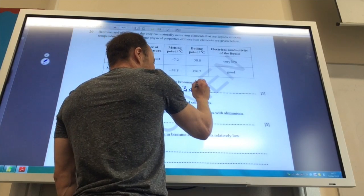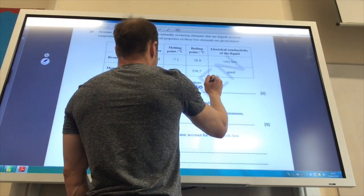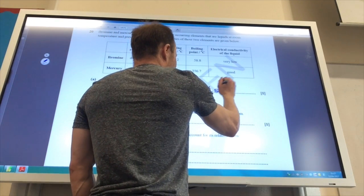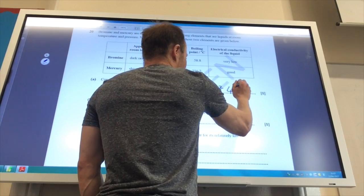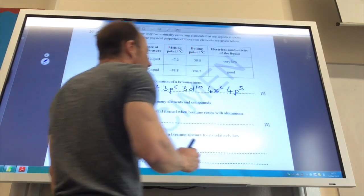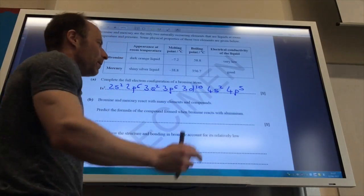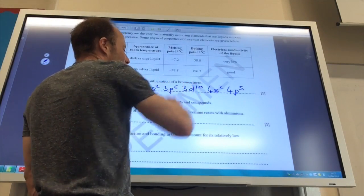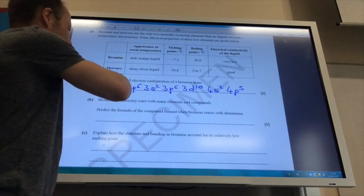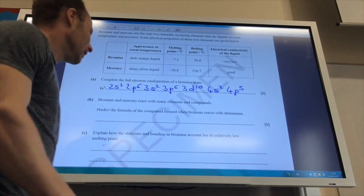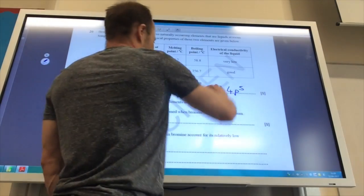3d10 and then we're into 4s2, 4p5. It doesn't matter if you swap those two around because you'll remember that the 4s are actually filled before the 3d. But this just makes it nice in terms of all the 2s, all the 3s, and all the 4s together.